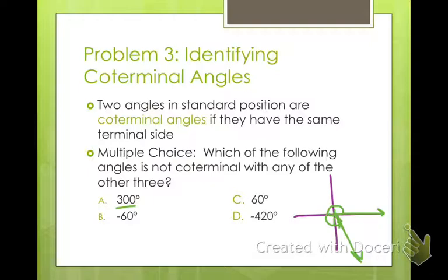Let me pick another color. Negative 60 degrees: I'm going to go from my initial side clockwise 60 degrees. Well, those ones are coterminal. What about positive 60 degrees? I'm going to go counterclockwise. It's up here. That one is not coterminal.